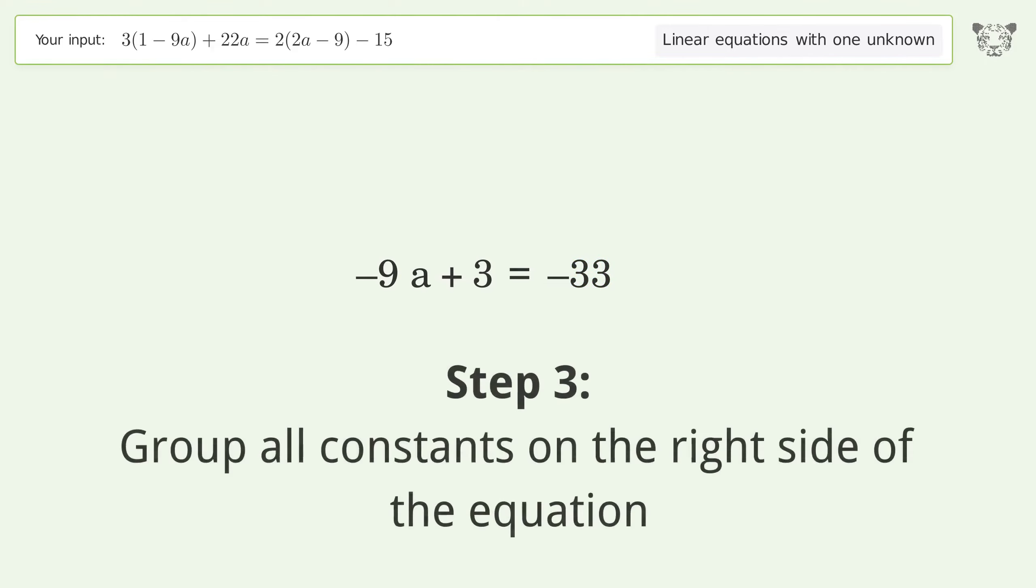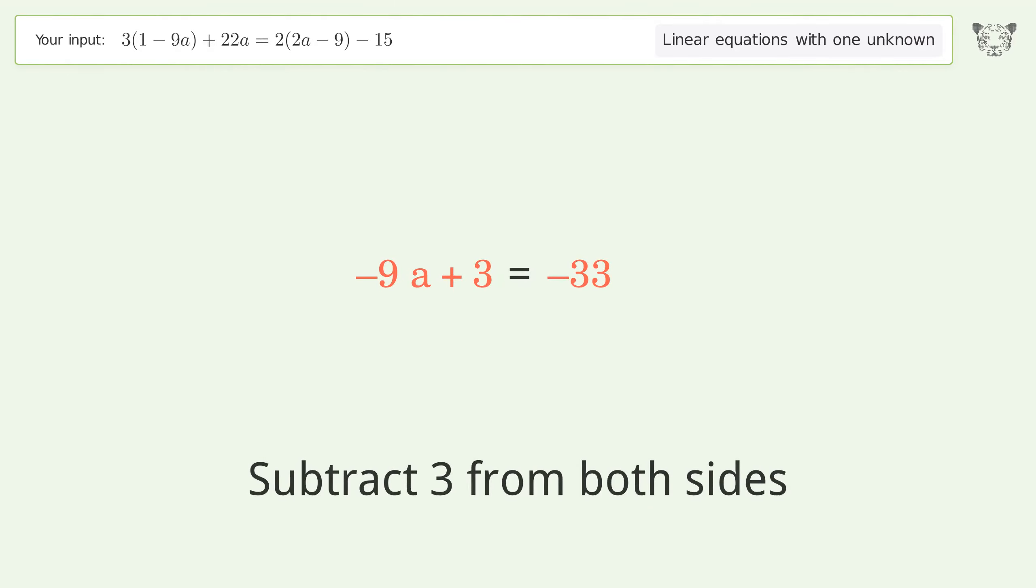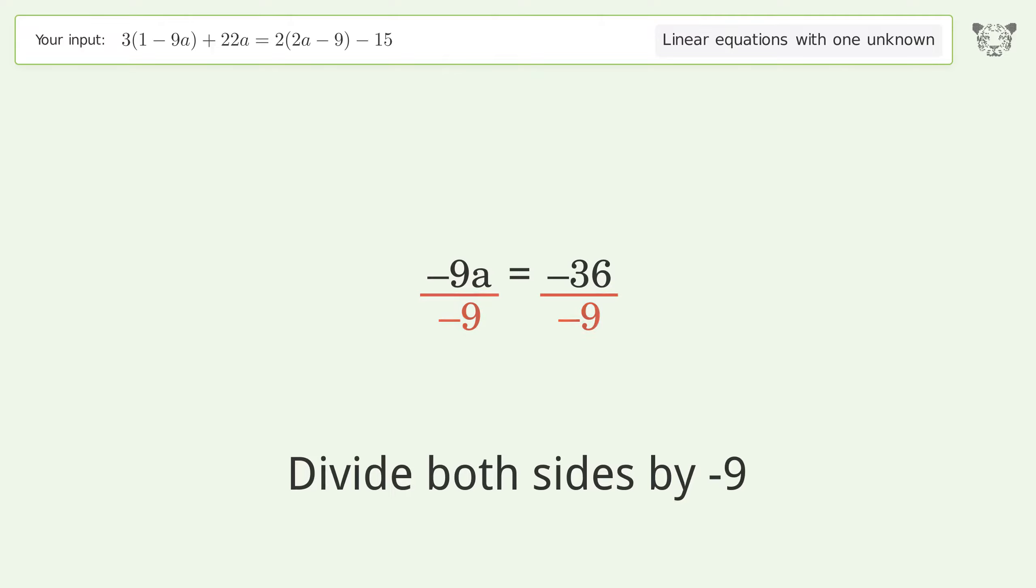Group all constants on the right side of the equation. Subtract 3 from both sides. Simplify the arithmetic, group like terms. Isolate the a. Divide both sides by negative 9. Group like terms, cancel out the negatives.